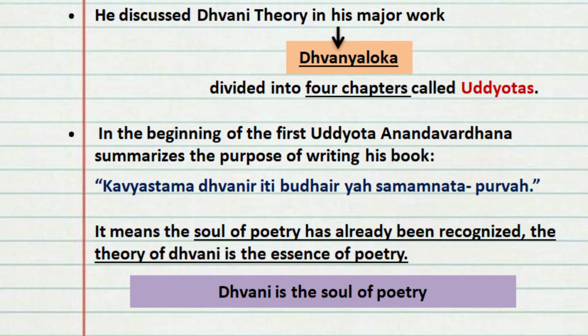Anandavardhana discussed the Dhvani theory in his major work, Dhvanyaloka. This Dhvanyaloka is divided into four chapters and each of these chapters is called Udyodhas. So there are a total of four Udyodhas in the work Dhvanyaloka.